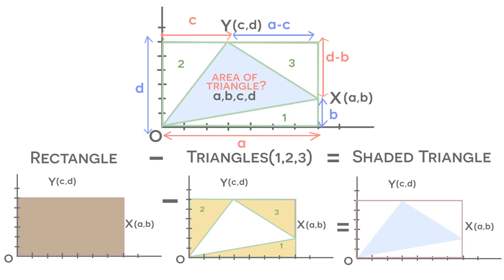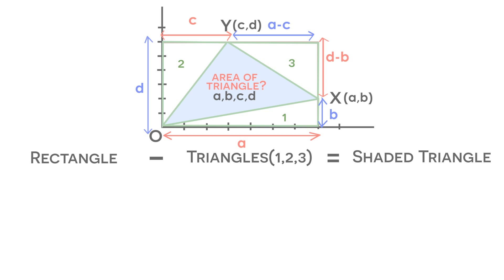All right, so now let's make everything into a formula. We know the area of the rectangle is equal to the length times the width. So the area of our rectangle is going to be equal to A times D. And now we can subtract the areas of triangles 1, 2, and 3.